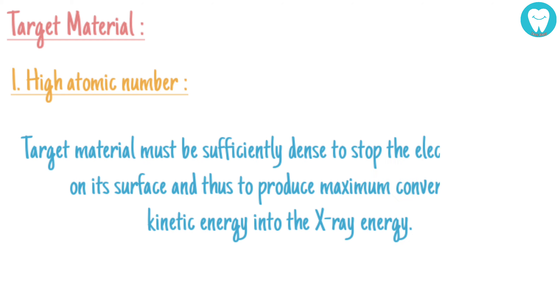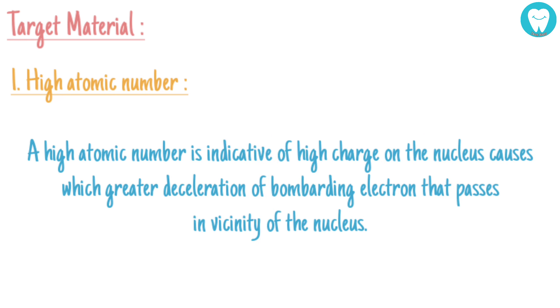The ideal target material should have: number one, high atomic number. Target material must be sufficiently dense to stop the electron abruptly on its surface and thus produce maximum conversion of kinetic energy into X-ray energy. A high atomic number is indicative of high charge on the nucleus, which causes greater deceleration of bombarding electrons that pass in vicinity of the nucleus. It results in production of high energy characteristic radiation.